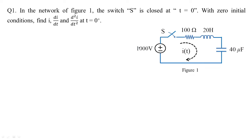In figure one, you have 1000 volts connected to 100 ohms, 20 henries, and 40 microfarads, and there is a switch which is open and going to get closed at t equal to zero. With zero initial conditions, we need to find current, di/dt, and d²i/dt² at t equal to zero plus.